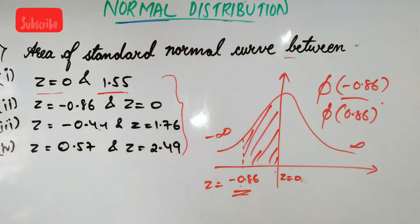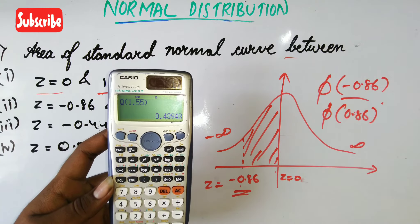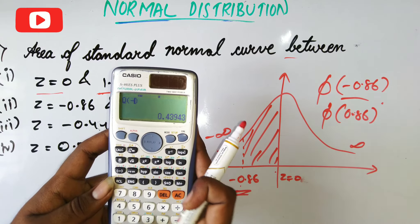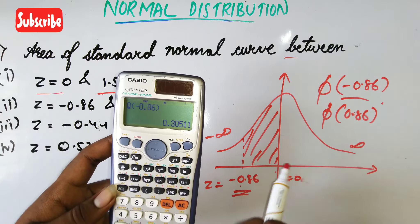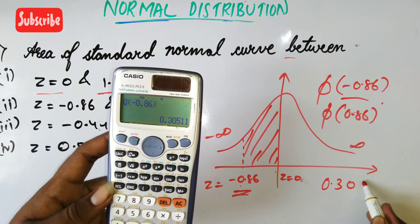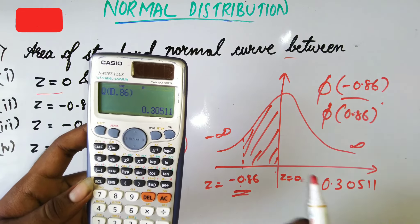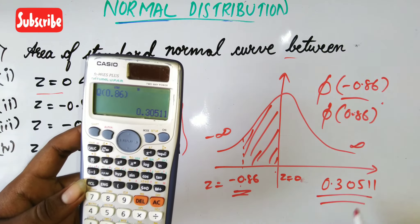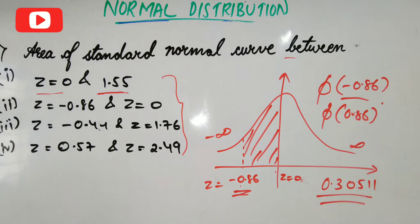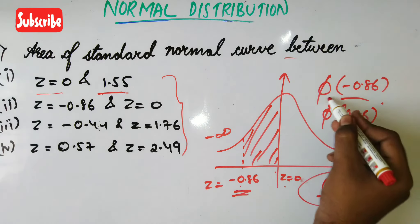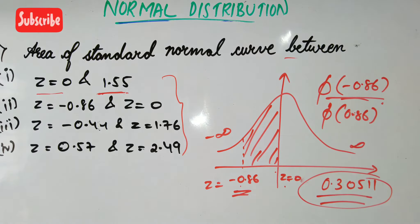I'll show you how to calculate this using the calculator. Using the Q function, if I give minus 0.86, it gives me 0.3051. If I change it to positive 0.86, it gives me the same value. So if they give you a negative value, you can take it as positive. The answer is 0.3051. Remember: whenever they ask from zero to some value, whether negative or positive, you can directly go for phi of that value.